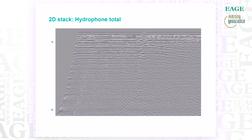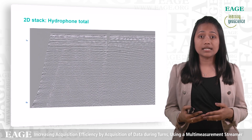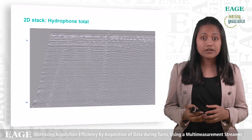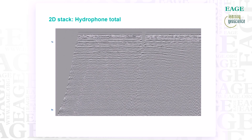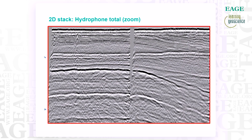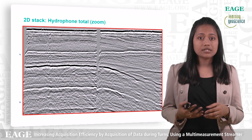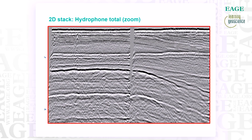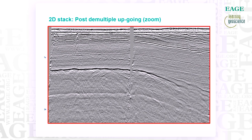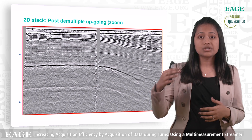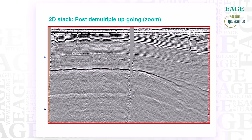Having analysed extensively the data at shot and stack level early in the processing, we would now like to take the data through an additional processing sequence to confirm that the quality of turned data does not deteriorate with further processing. Let us zoom in on a shallow window where we can see the signal-to-noise better. As we move from the total hydrophone stack to the up-going wavefield after demultiple through to 2D migration, there is no evidence to suggest a deterioration in signal quality or increase in noise across the section from left to right, i.e. with increasing turn. We applied a quick 2D demultiple, which is adequate for removing the majority of the clutter created by the water-bottom multiple for the purpose of the current analysis.